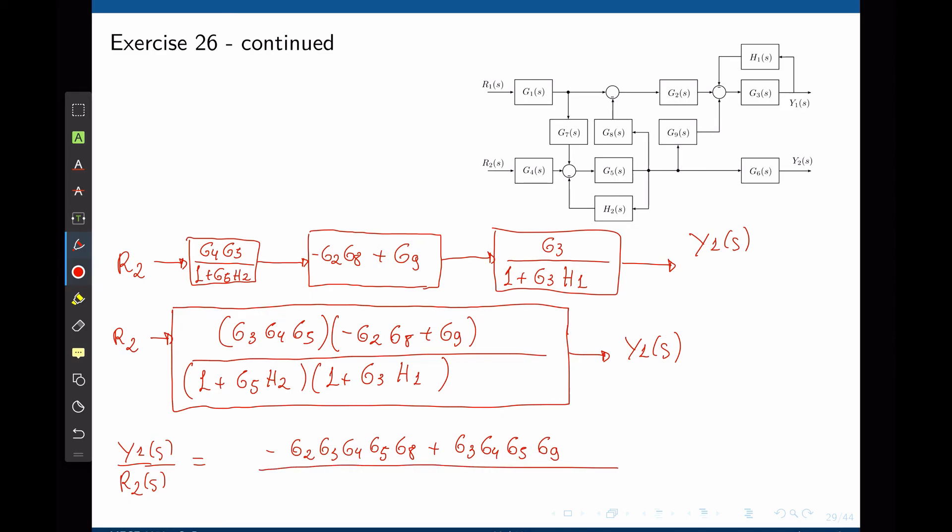divided by 1 plus G3 H1 plus G5 H2 plus G3 G5 H1 H2. And this is the final transfer function.